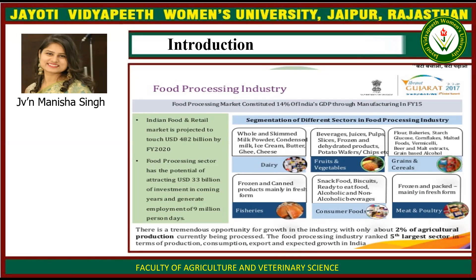The food processing industry is segmented as follows. In dairy: manufacture of whole and skim milk powder, condensed milk, ice cream, butter, ghee and cheese. In fruits and vegetables: production of beverages, juices, pulps, slices, frozen and dehydrated products, potato wafers and chips. In grains and cereals: production of flour, bakeries, starch, glucose, cornflakes, malted foods, vermicelli, beer, malt extracts and grain-based alcohol. In fisheries: frozen and canned products mainly in fresh form. In consumer foods: snack food, biscuits, ready-to-eat food, and alcoholic and non-alcoholic beverages.